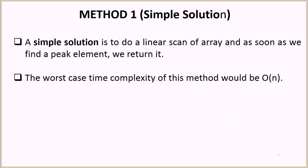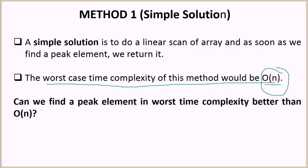The first solution is to do a linear scan of the array to find a peak element. When you iterate, you just check the previous element and the next element, and if the current element is not smaller than either of them, it's a peak element. The worst case time complexity of this method is O(n), because in the strictly increasing case the last element is the peak and we iterate through the whole array.